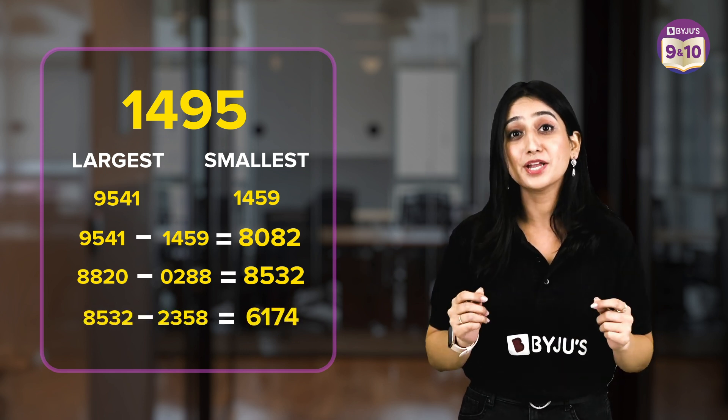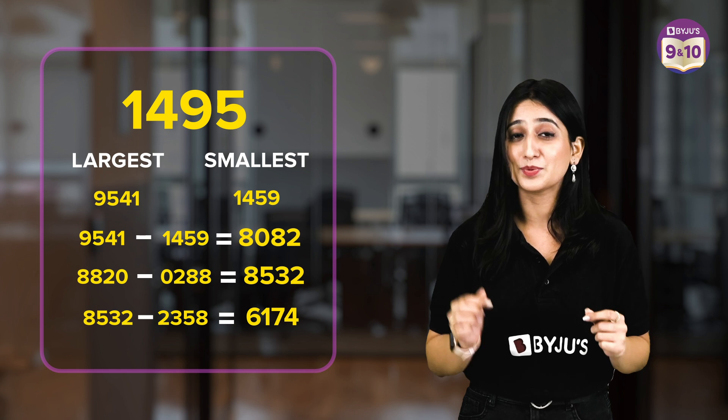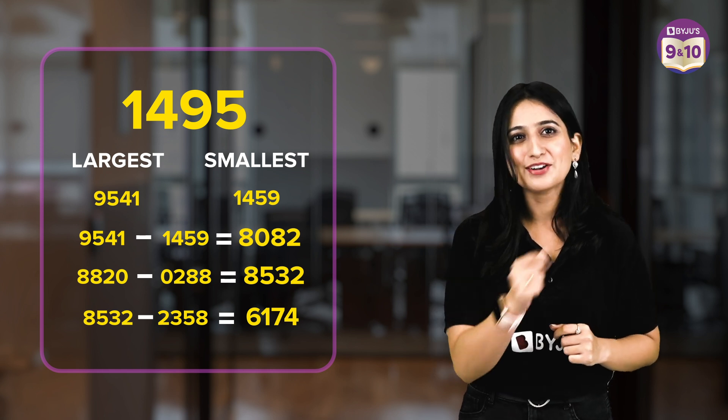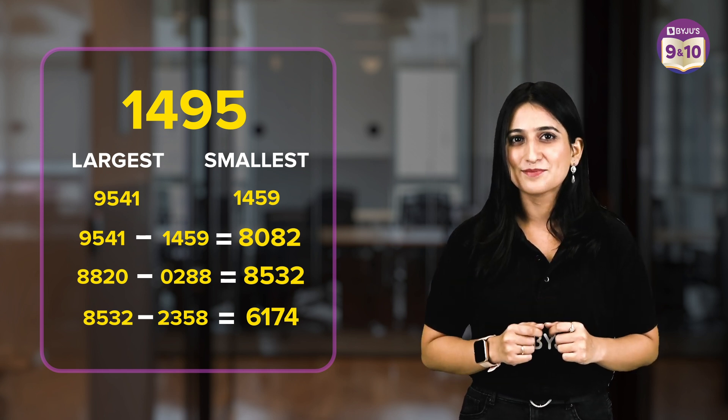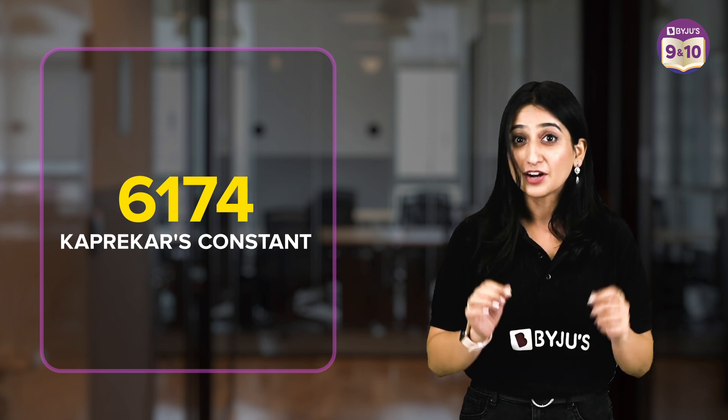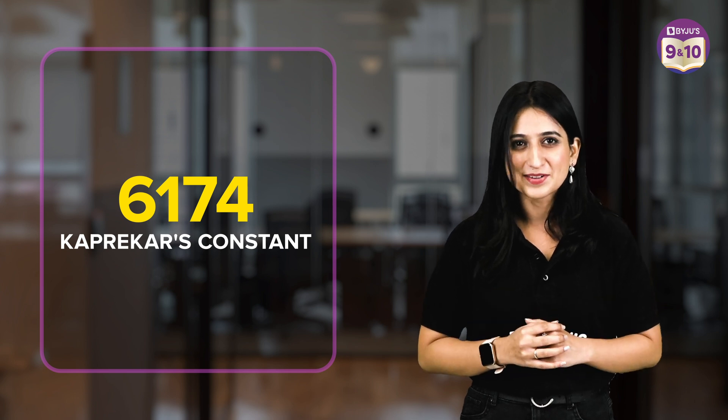No matter how many more times we repeat the process, we will always get the same result of 6174. That's why 6174 is called Kaprekar's Constant. Isn't it a fun mathematical mystery to explore? So, next time you encounter a 4-digit number, try the Kaprekar's routine and see what happens.